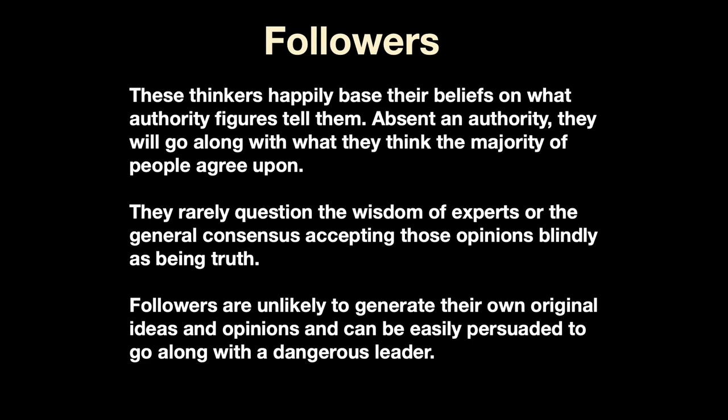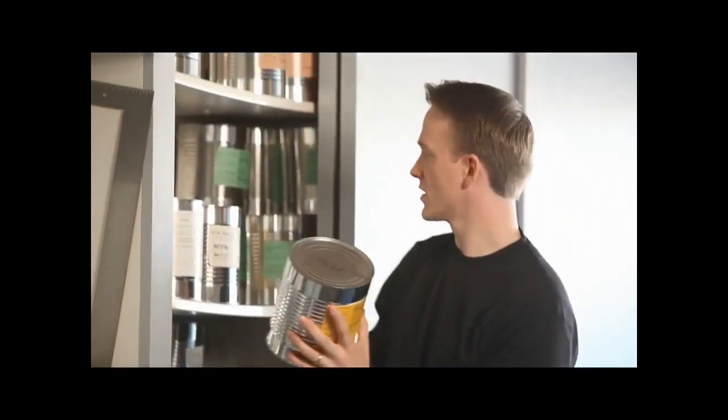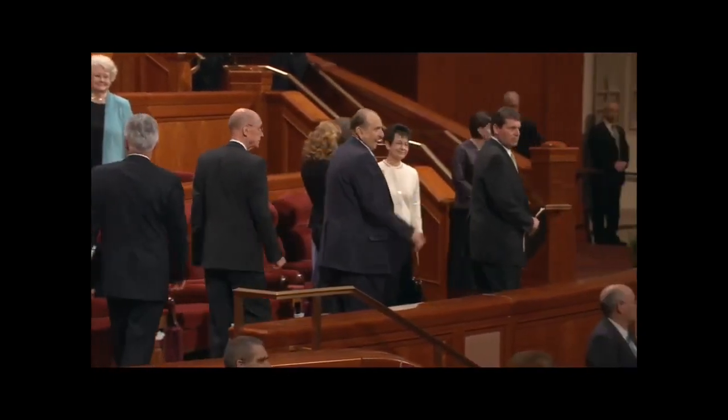Followers are thinkers who happily base their beliefs on what authority figures tell them. Absent an authority figure, they'll go along with what the majority of people agree upon. They rarely question the wisdom of experts or the consensus, accepting blindly these things as true. Followers are unlikely to generate their own ideas and opinions, and can be easily persuaded to join a dangerous leader. As one Mormon testimonial illustrates: 'About two years ago, my husband got laid off from his job after being on the job for 10 years. It was kind of a scary thing, but one thing we knew was we were okay, because we had followed the counsel of the prophet, and we had gotten ourselves debt-free and had built up a great food storage. The prophet speaks not only for the church, it's for the whole world, and I believe that God speaks to him and he in turn speaks to us and lets us know the mind and the will of God.'